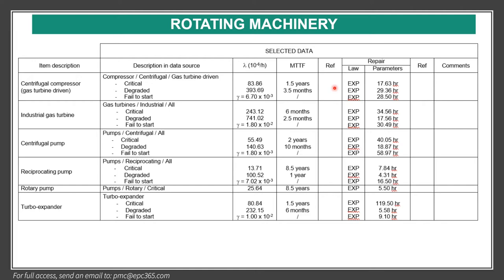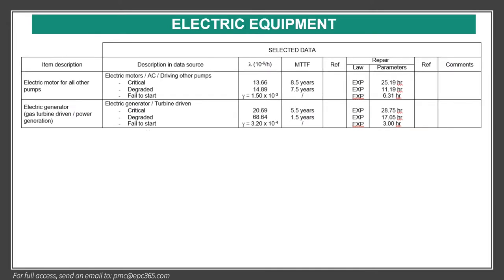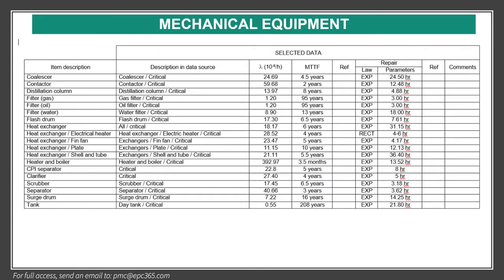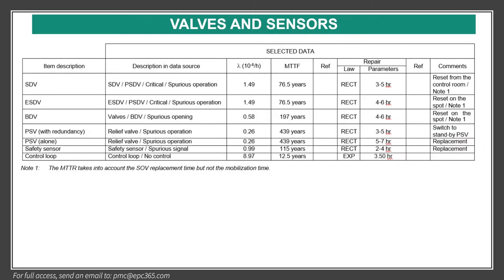For auditability and transferability the distribution is exponential, and repair parameters are given in hours with references and comments about company experience. This same approach applies for electrical equipment, mechanical equipment, and valves and sensors. For replacement items, a rectangular distribution is used rather than exponential — it applies when something can simply be replaced.